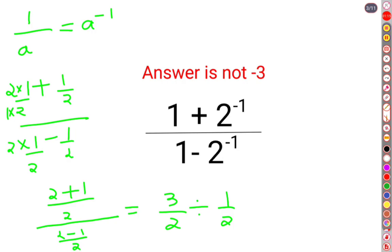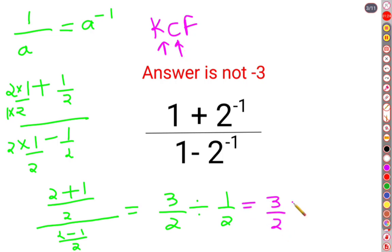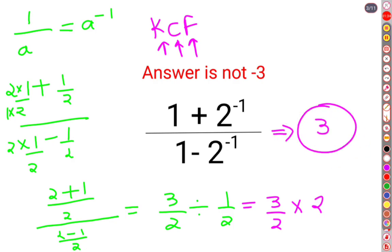Whenever there is a fraction involved in division, follow the acronym KCF: K stands for keeping the first number as it is, C stands for changing the division sign to multiplication, and F stands for flipping — taking the reciprocal of 1/2, which is 2. So the answer for this question is 3. I hope this is very clear to everyone. That's it for today — I'll see you in the next video.